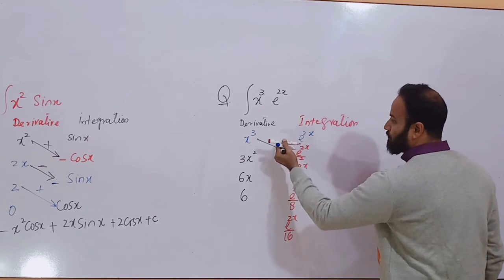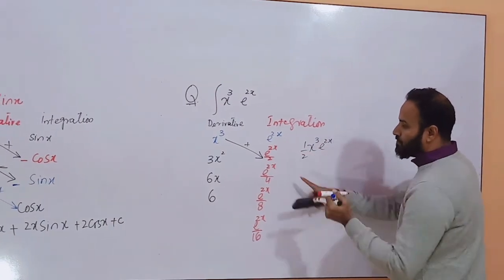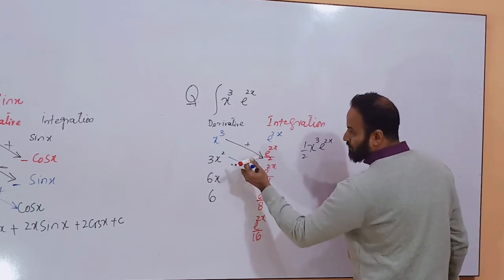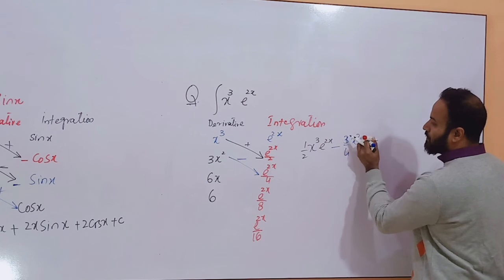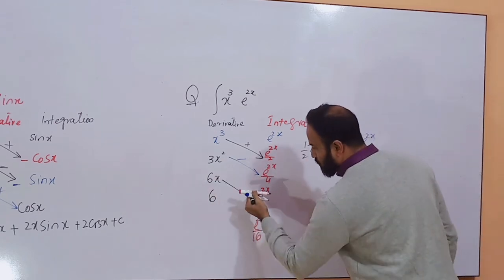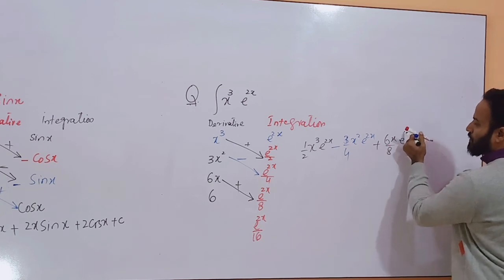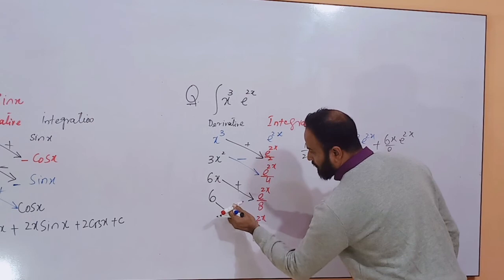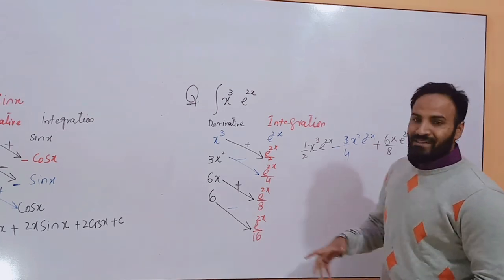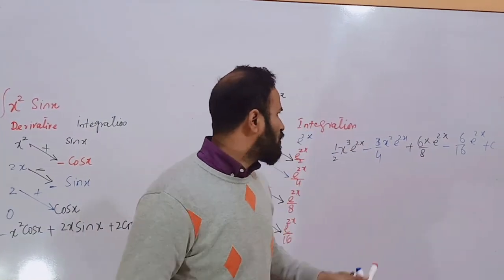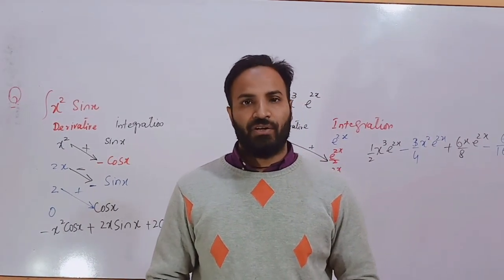Now start multiplying these two terms with positive sign. The answer is x³ · e^(2x) · 1/2. Now multiply these two terms with negative sign: minus 1/4 and 3x² · e^(2x). Write these two terms with positive sign: 6x/8 · e^(2x). And now write these two terms with negative sign: minus 6/16 · e^(2x) plus C. So this is your answer — you can simplify as well. Hope you like this video, so please like, subscribe, comment and share my video. Thank you very much.